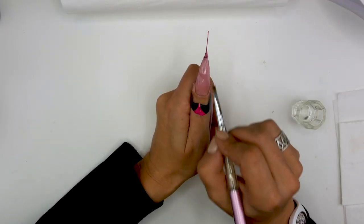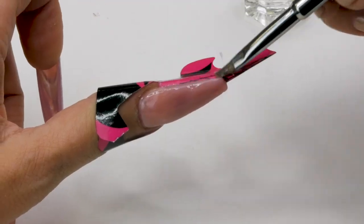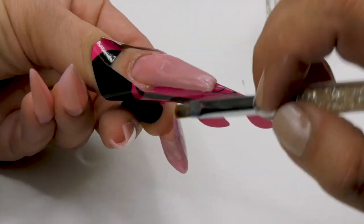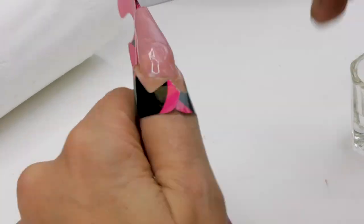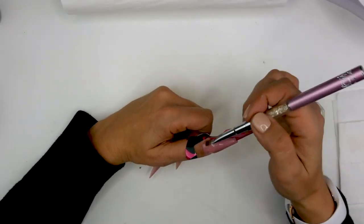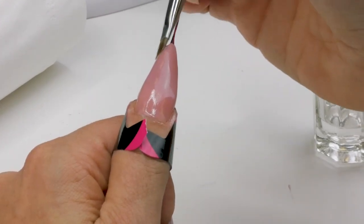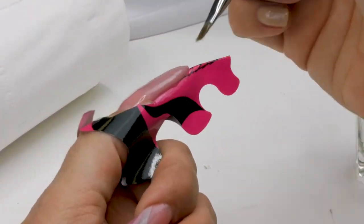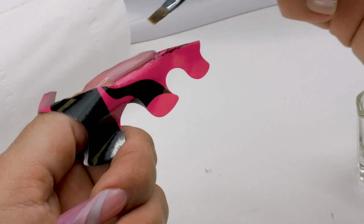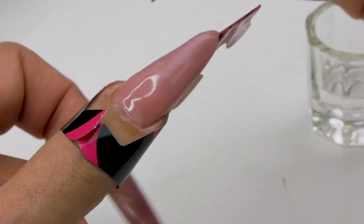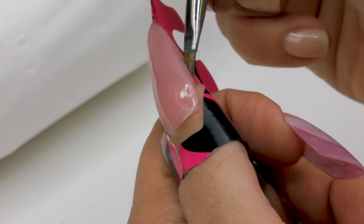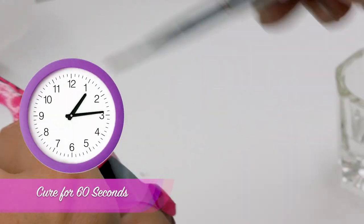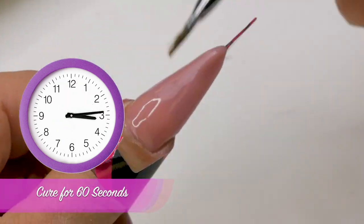As soon as you feel like the brush is a little bit tacky with the product, that means you need to take some more Gel Residue Wipe-off Solution. And when you're okay with the shape of your nail, just put it in a lamp for a whole minute.